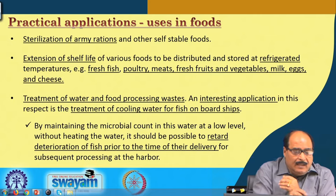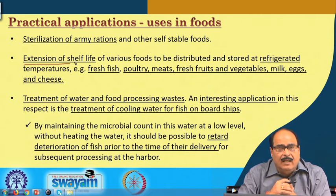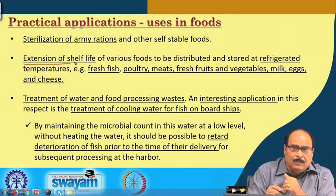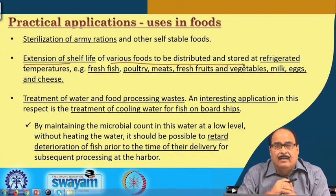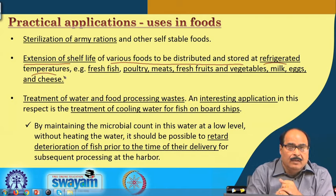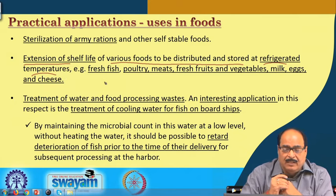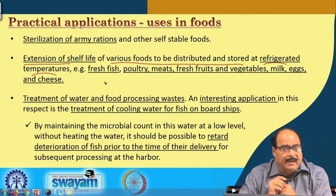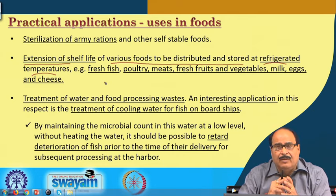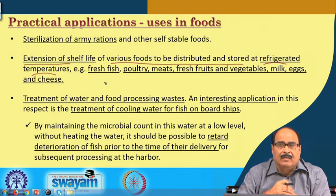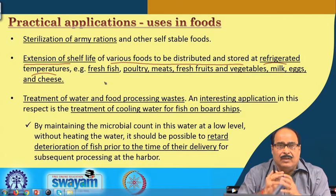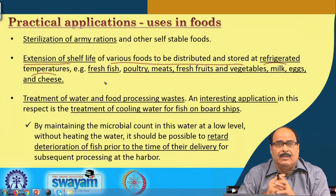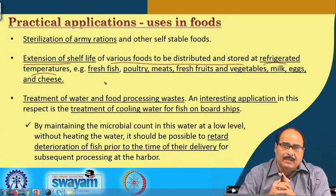Another application is the extension of shelf life of foods normally distributed or stored at refrigerated temperatures. Particularly perishable foods like fish, poultry, meat, fresh fruits and vegetables, milk, egg, and cheese can be irradiated and made room-temperature stable without any significant loss or influence on quality factors, potentially eliminating the need for cold chain refrigeration.